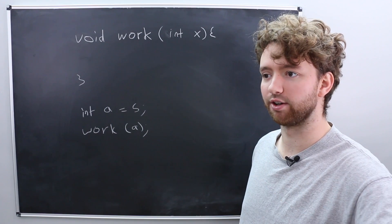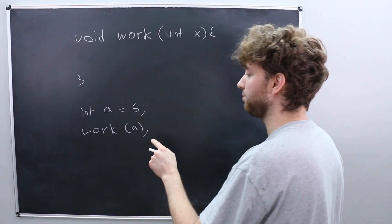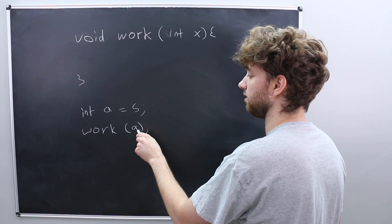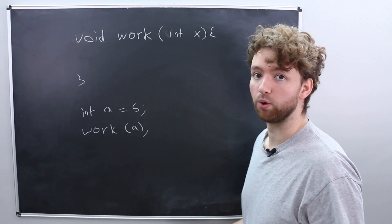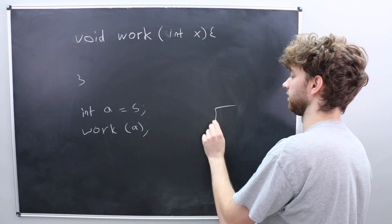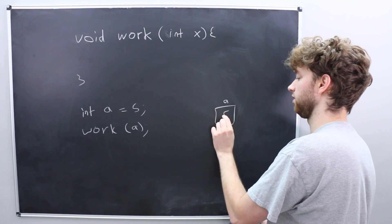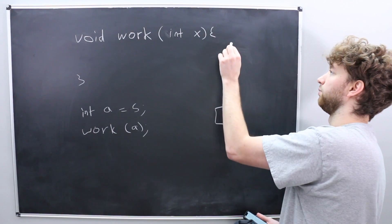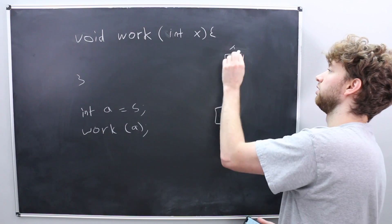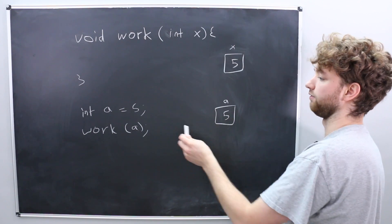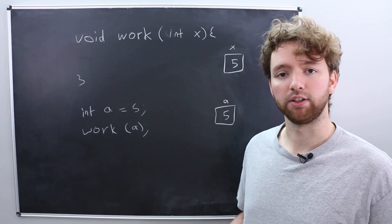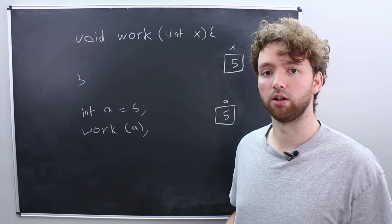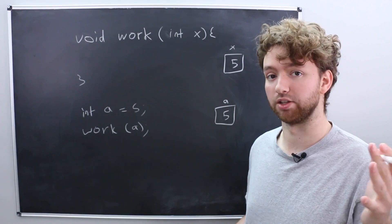So what happens here is this value, notice we're not doing anything with references yet. This is just standard passing by value. So what happens here is when we pass in a the value 5 gets copied to this variable x. So in memory it's going to look something like this. We have the variable a with the value 5 and then we have the variable x which gets the value 5 when we pass it in. For simple types like integers this is perfectly fine and actually for small objects this is going to work fine as well.